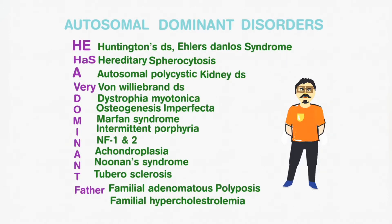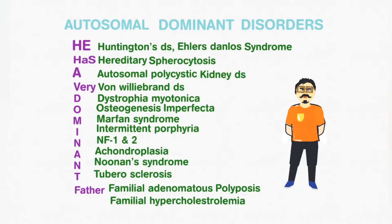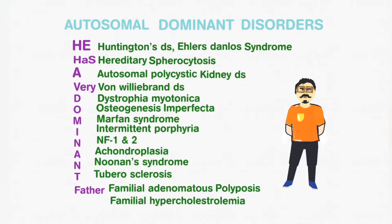Continuing Autosomal Dominant Disorders: Dystrophia Myotonica, Osteogenesis Imperfecta, Marfan Syndrome, Intermittent Porphyria, Neurofibromatosis 1 and 2, Achondroplasia, Noonan's Syndrome, Tuberous Sclerosis, Familial Adenomatous Polyposis, and Familial Hypercholesterolemia.